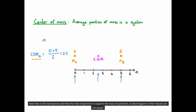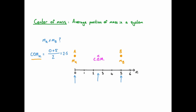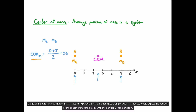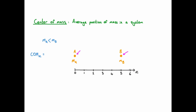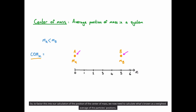Note that in this example we said that the mass of particle A is equal to the mass of particle B. So what happens if their masses are not equal? If one of the particles has a larger mass — let's say particle B has a higher mass than particle A — then we would expect the position of the centre of mass to be closer to particle B than particle A. Large masses do have a greater influence over the position of the centre of mass than small masses. So to factor this into our calculation, we now need to calculate what's known as a weighted average of the particles' positions. Rather than just adding together the position coordinates of each of the particles and dividing by the number of particles, we multiply each particle's position by its mass and divide by the total mass.